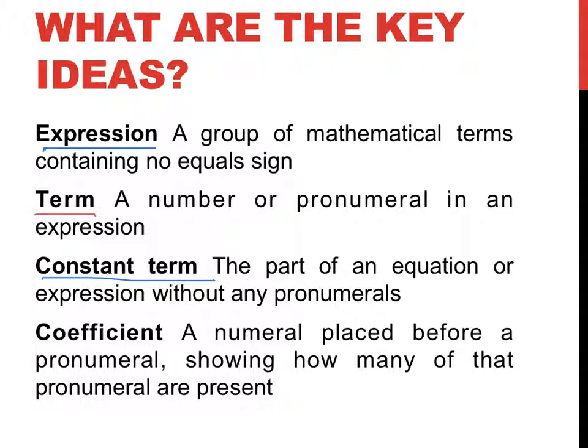Basically, that's something that doesn't change. Now, depending on the value of x, 3x could change. Because if x was equal to 4, that would be 3 times 4. Or if x is equal to 2, that would be 3 times 2.